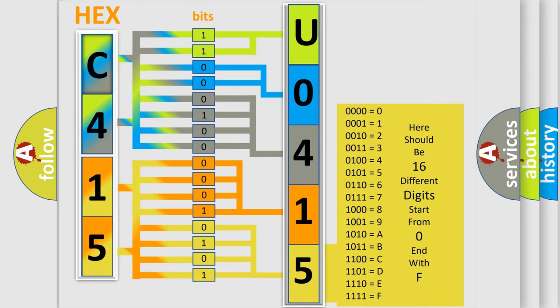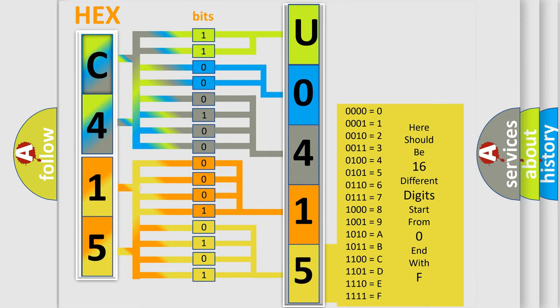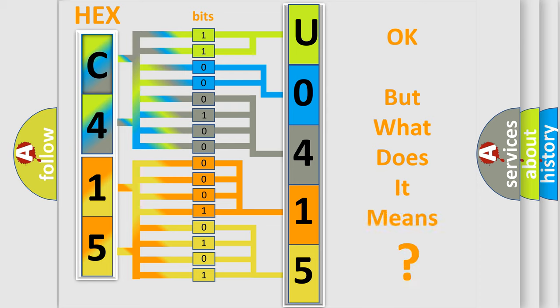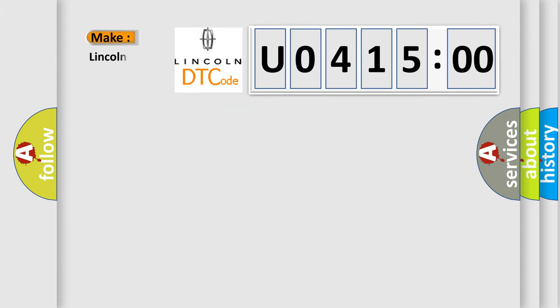We now know the way the diagnostic tool translates received information into a more comprehensible format. The number itself does not make sense to us if we cannot assign information about what it actually expresses. So, what does the diagnostic trouble code U041500 interpret specifically for Lincoln car manufacturers?